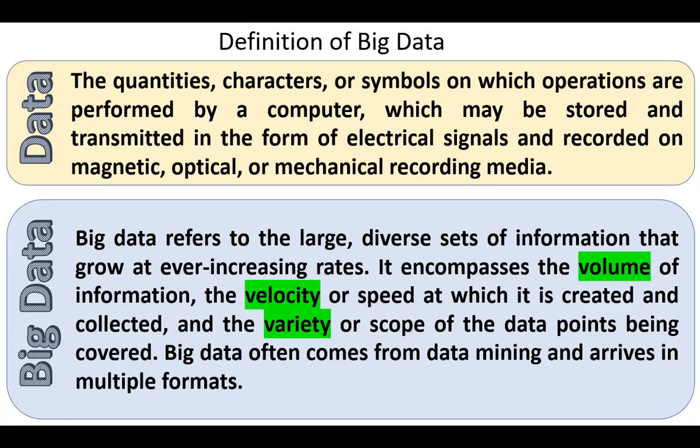Volume, velocity, and variety — three Vs — are the main characteristics of big data. These three Vs were extended to six Vs, as we will come to that when we discuss the characteristics of big data.